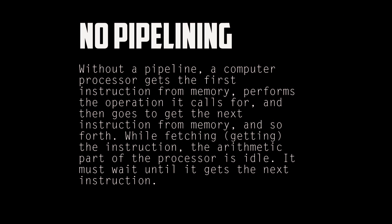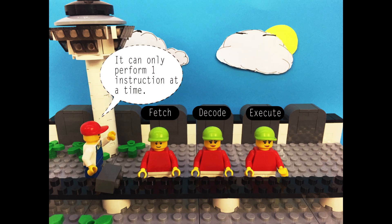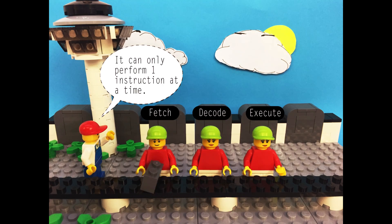Without pipelining, your computer processors get the first instruction from memory, performs the operation it calls for, and then goes to the next instruction from memory, and so forth. While fetching the instruction, the arithmetic part of the processor is idle. It must wait until it gets the next instruction, only performing one instruction at a time.